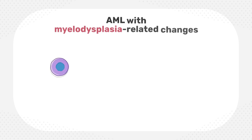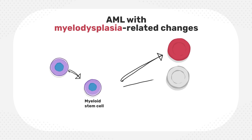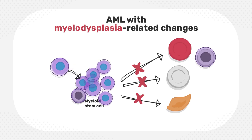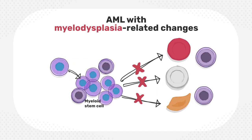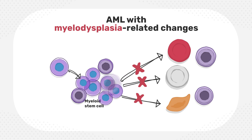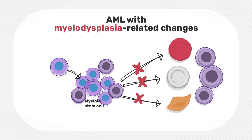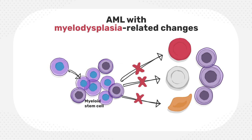AML with myelodysplasia-related changes. This is a form of AML which sometimes develops from another blood cell disease called myelodysplastic syndrome. Similar to myelodysplastic syndrome, the blood cells do not mature and function properly. In addition, the number of leukemic blast cells in the blood is increased.